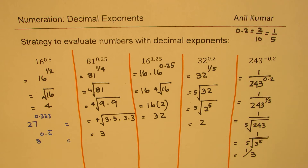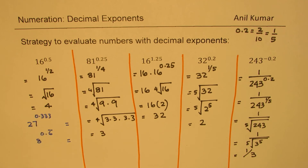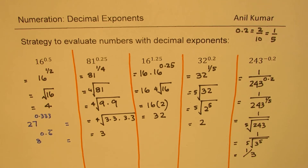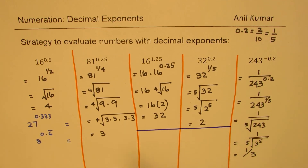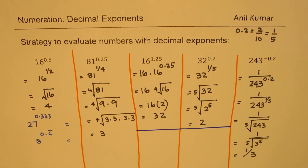Now we have two questions: what is 27 to the power of 0.333 recurring, and what is 8 to the power of 0.6 recurring? Let's see how to handle repeating decimals. Let me rewrite 27 using a different ink.